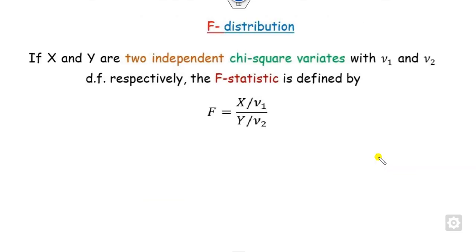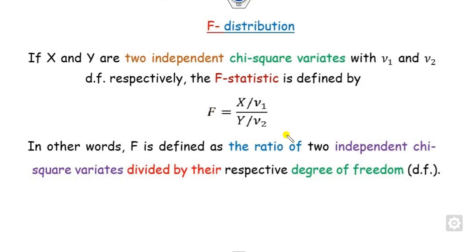The F distribution is defined as follows: if X and Y are two independent chi-square variates with degrees of freedom N1 and N2, then you can write the F statistic. In other words, F is defined as the ratio of two independent chi-square variables divided by their respective degrees of freedom.